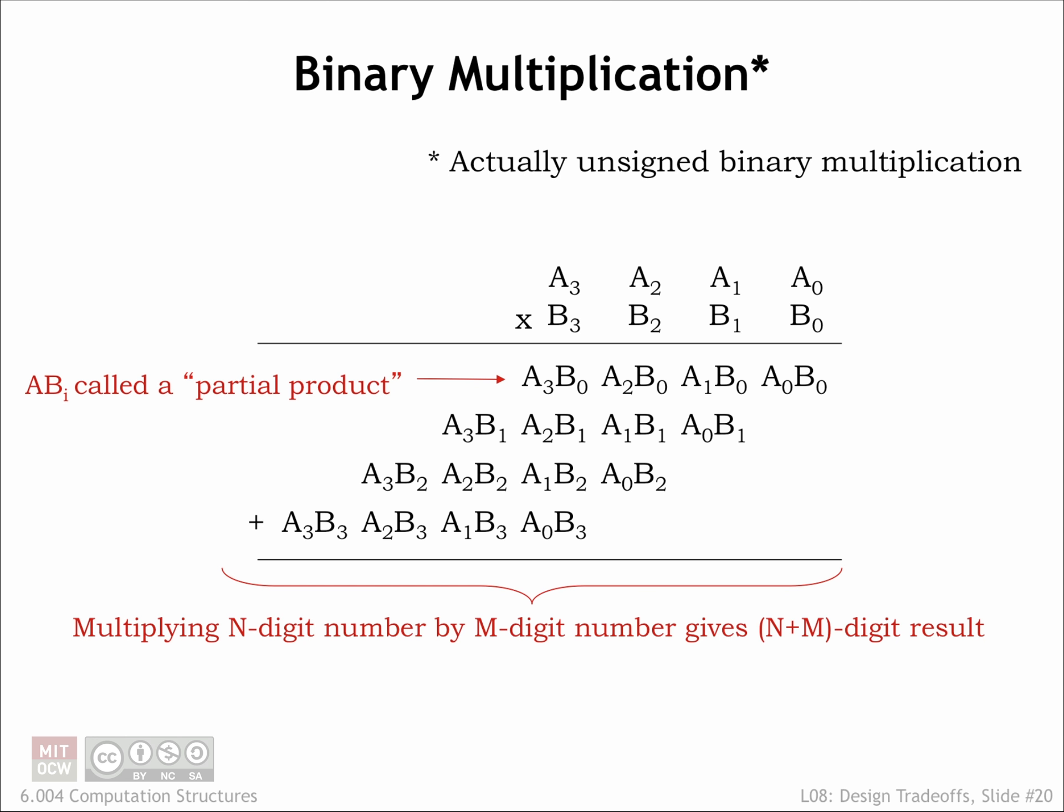Here's the multiplication operation for two unsigned 4-bit operands broken down into its component operations. This is exactly how we learned to do it in primary school. We take each digit of the multiplier, the B operand.